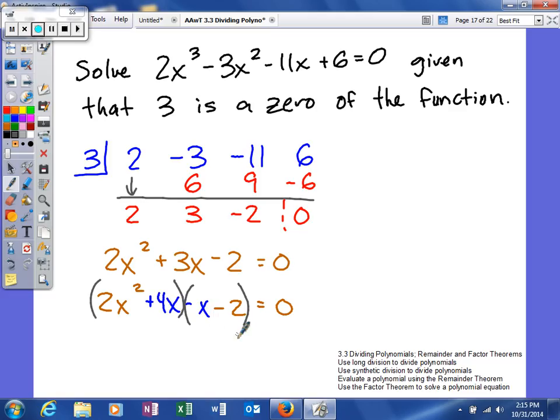So out of this, we'll factor out a 2x, and that's going to leave us x plus 2. And out of this one, we can factor out a negative 1 and leave us x plus 2.